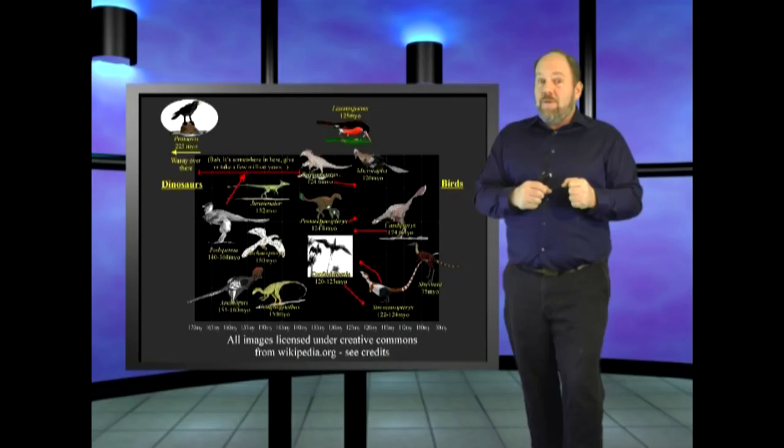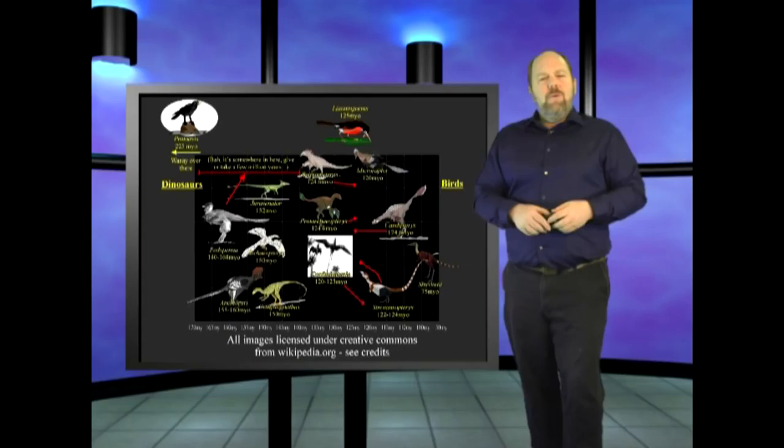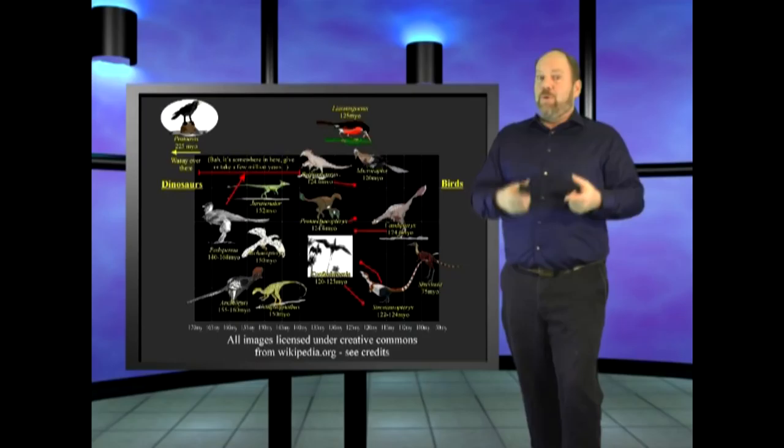We are taught that dinosaurs evolved into birds, proof of evolution from the fossil record, complete with alleged feathered dinosaurs. But when you look at the actual fossils, first of all, there's huge questions about these alleged feathers, and if they are feathers at all.